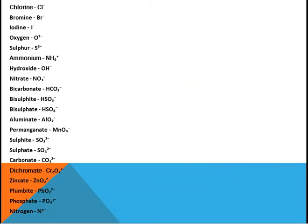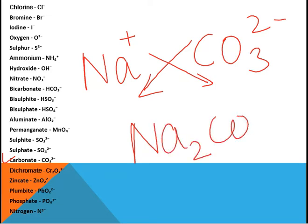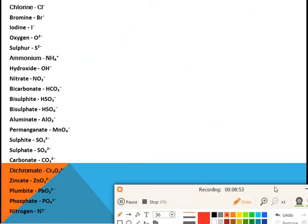Suppose you want to write the formula for sodium carbonate. Sodium ion is Na⁺ and carbonate ion is CO₃²⁻. Since the charges are not equal, we exchange the valencies. We get Na₂CO₃. One important thing: when exchanging valencies, you don't write the plus or minus charge at the bottom — only write the number. So the formula is Na₂CO₃.